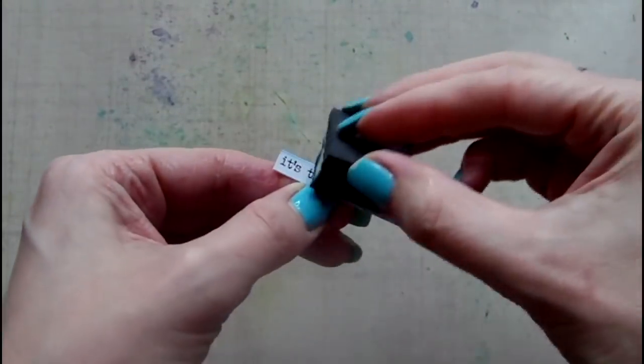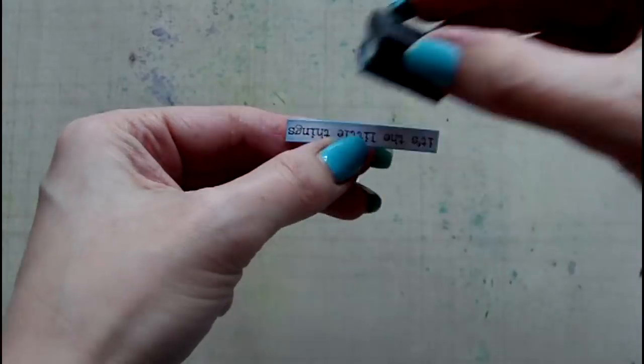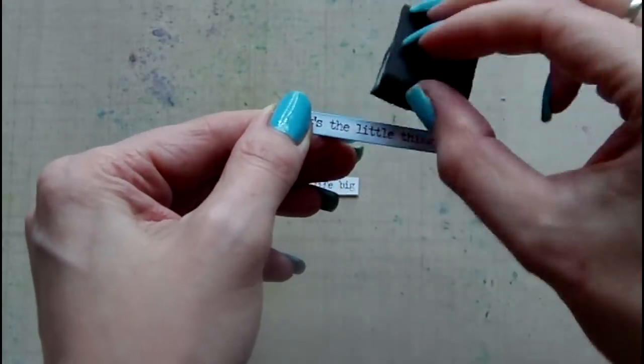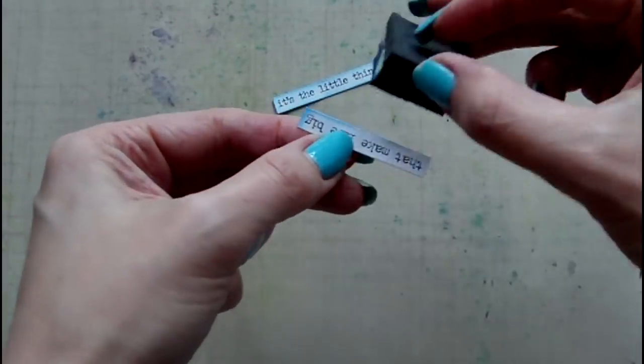After this has dried, I select some text for my postcard. This is from a Small Talk sticker set by Tim Holtz. I'm adding some of the same Distress Inks in Salty Ocean and Wilted Violet. I'm applying these using a piece of Ranger Cut and Dry Foam.